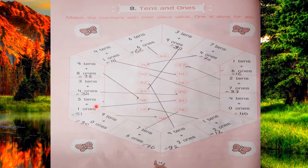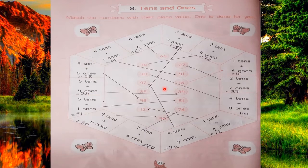Next, 5 tens and 1 one — 5 tens means 50, and 1 one is 1. So 50 plus 1 is 51. We will match with 51. Next, 3 tens and 4 ones — 3 tens means 30, and 4 ones is 4. So 30 plus 4 is 34. We will match with 34.